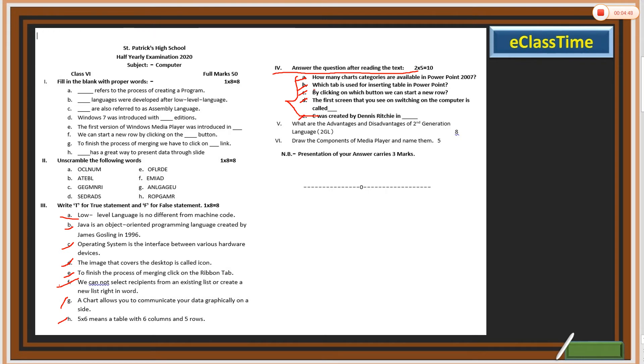Number one: How many chart categories are available in PowerPoint 2007? Number B: Which tab is used to insert table in PowerPoint? Number C: By clicking on which button you can start a new row?